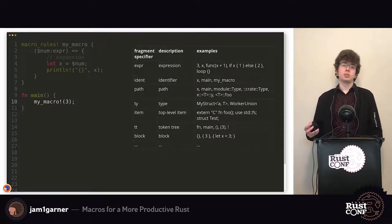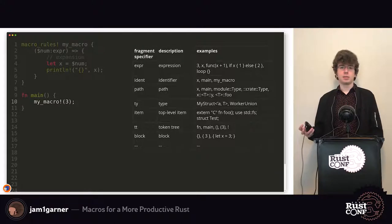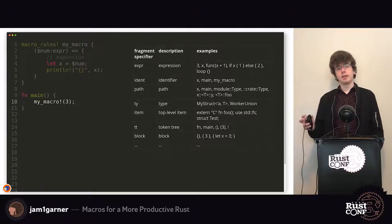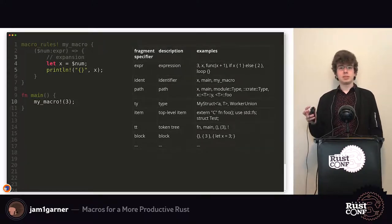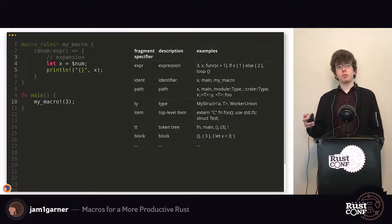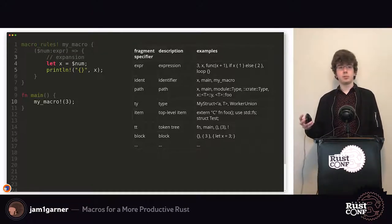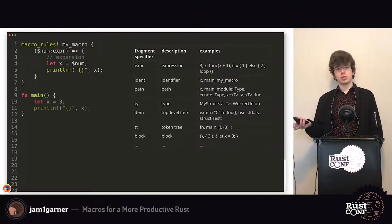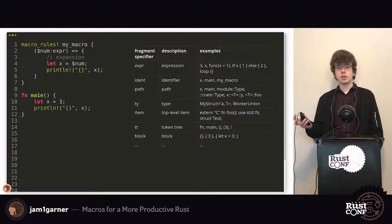Here's an example of calling the macro — in this case just passing in the symbol 3, which is a valid expression. If we want to see what it looks like when it expands, we take the expansion and template in the variable we're passing in. In this case it's just `num`, prefixed by a dollar sign, and so it expands to this.